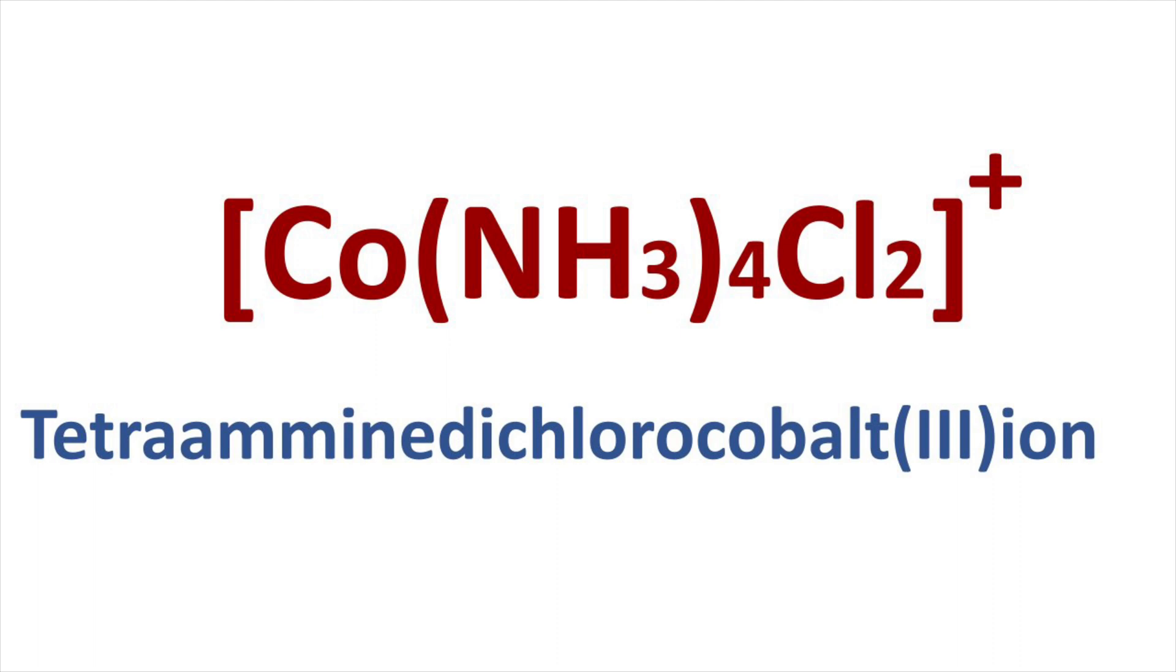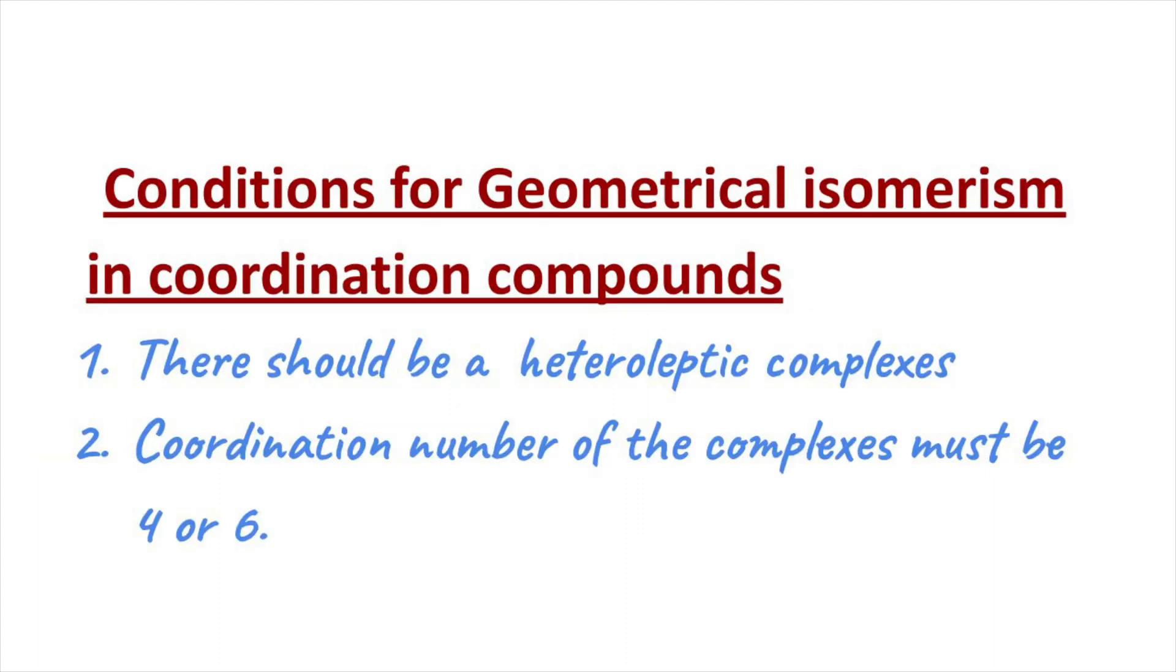For a complex to undergo geometrical isomerism, certain conditions are there. The complex must satisfy that condition. According to that, there must be a heteroleptic complex. The coordination number of the complex must be four or six.